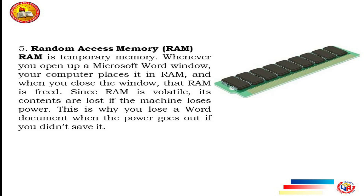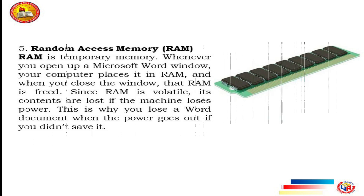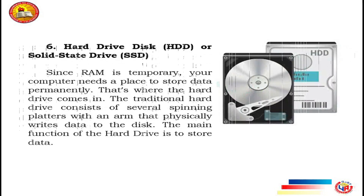A CPU, sometimes referred to as a computer's brain, is the core of the machine. It performs the calculations needed by a system and can vary in speed. The work that a CPU does generates heat, which is why your computer has a fan inside. A more powerful CPU is necessary for intense computer work like editing high definition video or programming complex software.